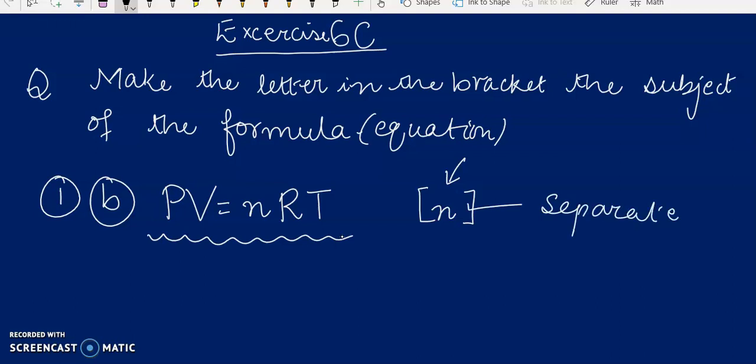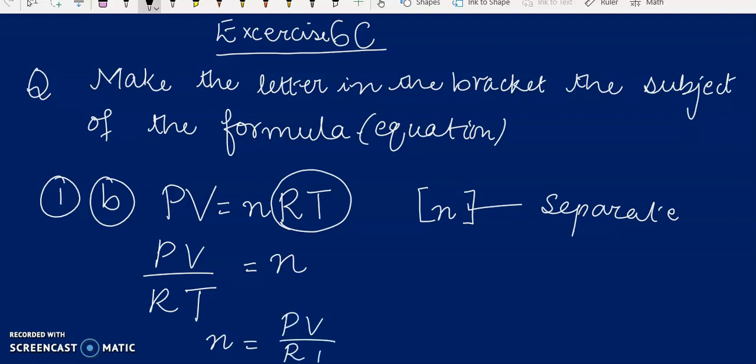So how we can separate it? We will use the four rules that I just told you to separate n. Now in this equation, you can see that with n, RT is being multiplied. So when it will go to the other side, it will be divided. n is now separated, which means it has become the subject of the formula. So this is our answer. You can write it the other way around as well. This is your answer.